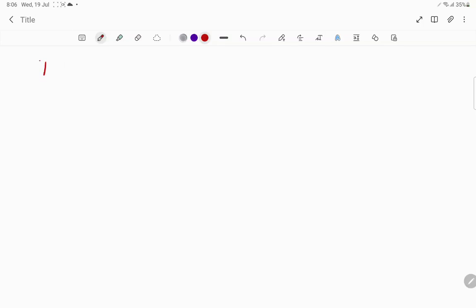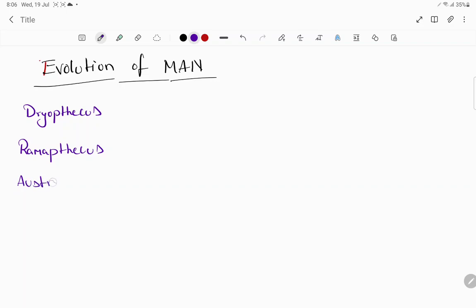Next is evolution of man. First we have to remember the names: Dryopithecus, Ramapithecus, Australopithecus, Homo habilis, Homo erectus, Neanderthalensis.